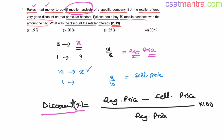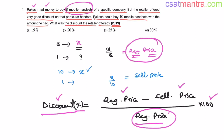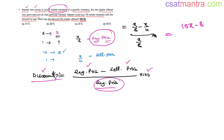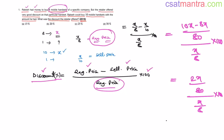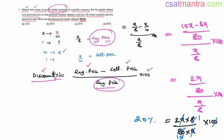We want the percentage discount: (regular price minus selling price) divided by regular price, multiplied by 100. Regular price is X/8, selling price is X/10. So: (X/8 minus X/10) divided by (X/8), multiplied by 100. This gives (10X minus 8X)/80 divided by X/8, multiplied by 100, which simplifies to (2X/80) times (8/X) times 100. X cancels, giving 2 times 8 times 100 divided by 80, which equals 20%. Our answer is B.